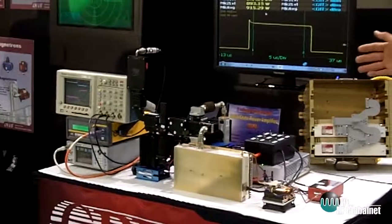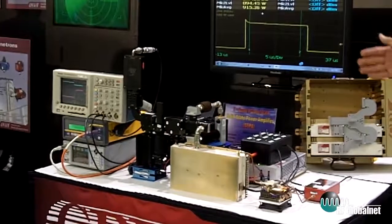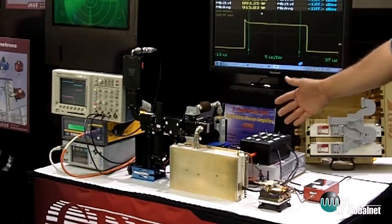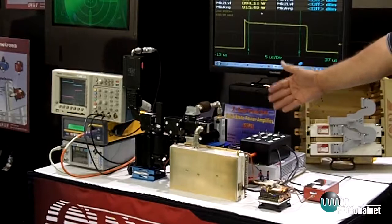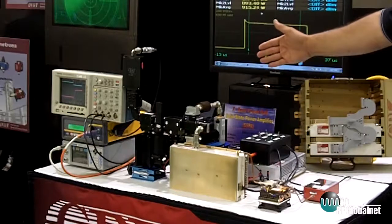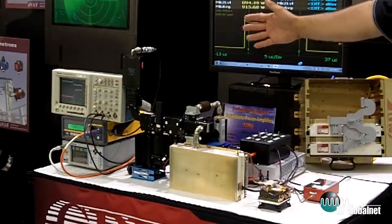We're actually demoing a complete radar front end. We have the 900-watt SSPA transmitter followed by circulators, loads, and a receiver protector.